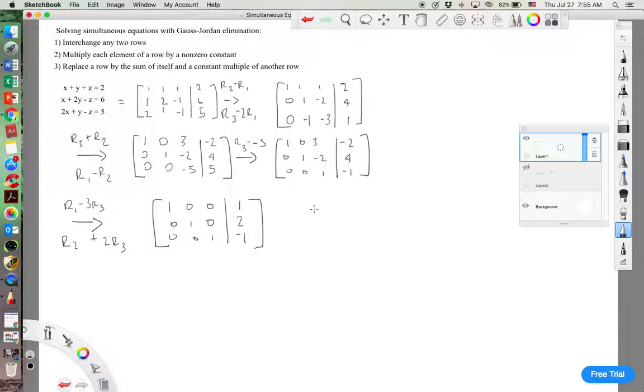And so our solutions are x equals 1, y equals 2, z equals negative 1. And we can check that by plugging these numbers back into that original equation.